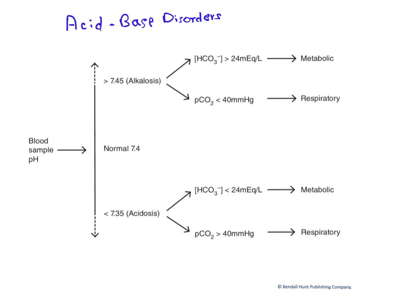This figure summarizes major acid-base disorders that can occur in people. Normal human arterial blood pH is typically about 7.40, with a range extending from as low as about 7.35 to as high as approximately 7.45.